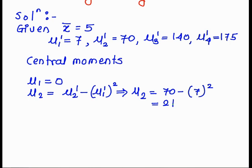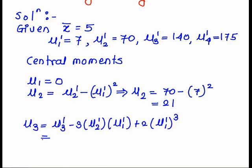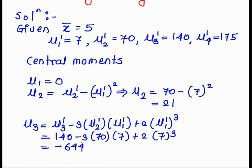Now we calculate mu 3. The formula is: mu 3 is equal to mu 3 dash minus 3 times mu 2 dash times mu 1 dash plus 2 times mu 1 dash cubed. After substituting the values we get mu 3 is equal to minus 644.